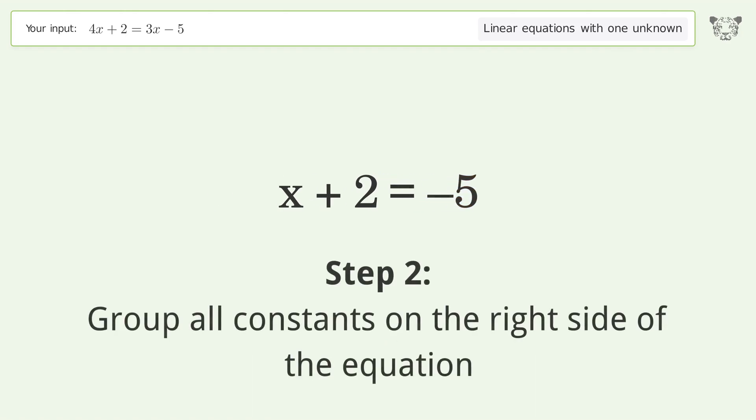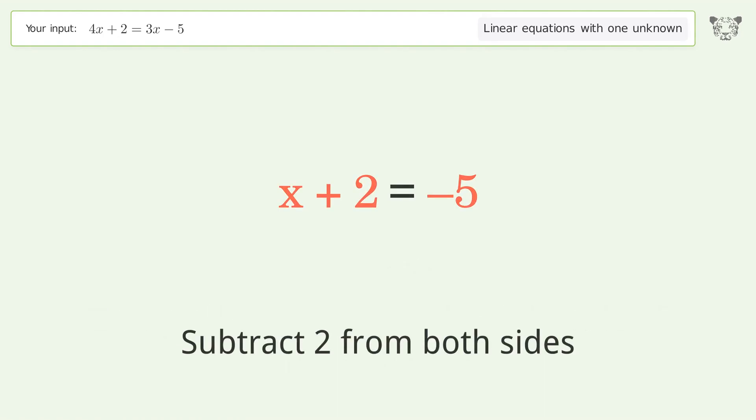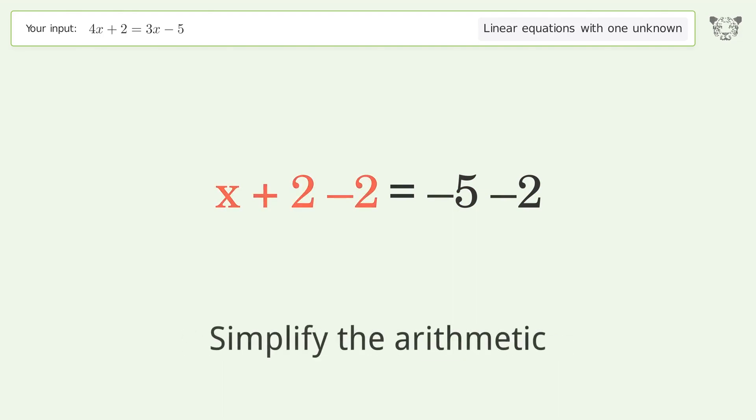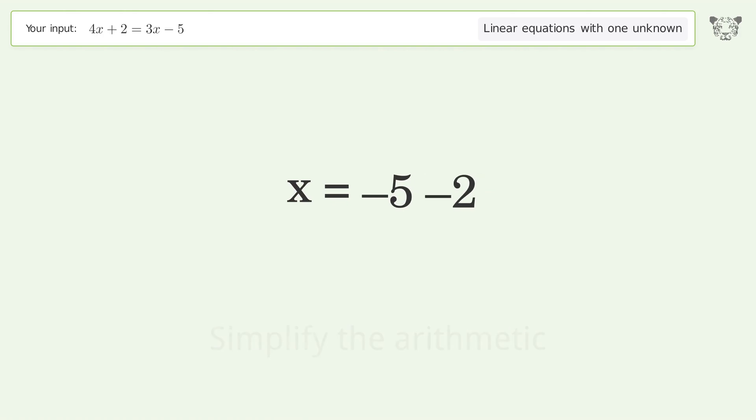Group all constants on the right side of the equation. Subtract 2 from both sides. Simplify the arithmetic. And so the final result is x equals negative 7.